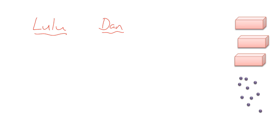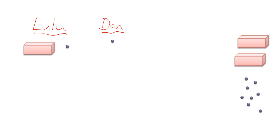I also have a whole big pile of sweets. So now I can hand out my sweets. I can give Lulu that, and I can give Dan that. Lulu and Dan want to have exactly the same number of sweets every time. So I've given Lulu and Dan the same number of sweets — even though they look different, they mean exactly the same thing. The equation form of this would be something like X plus 1 is equal to 5.